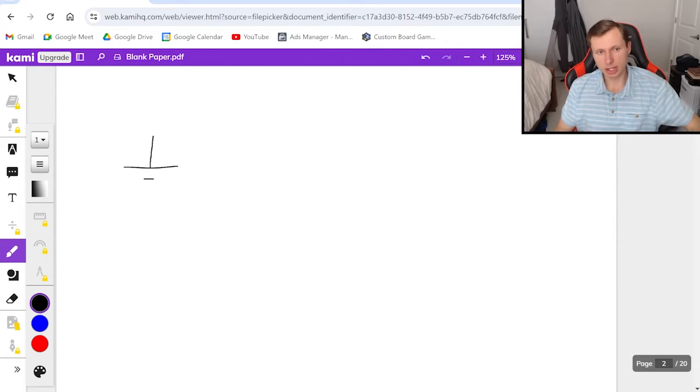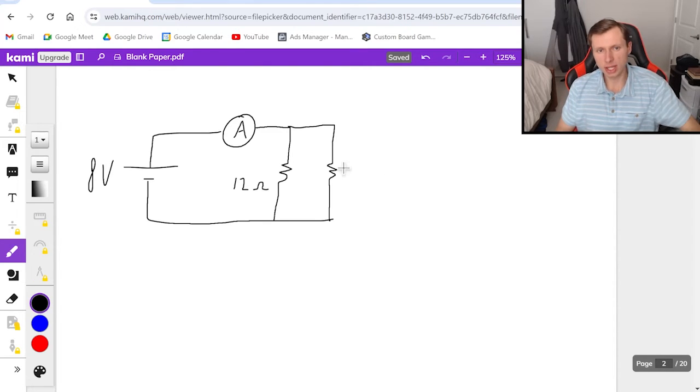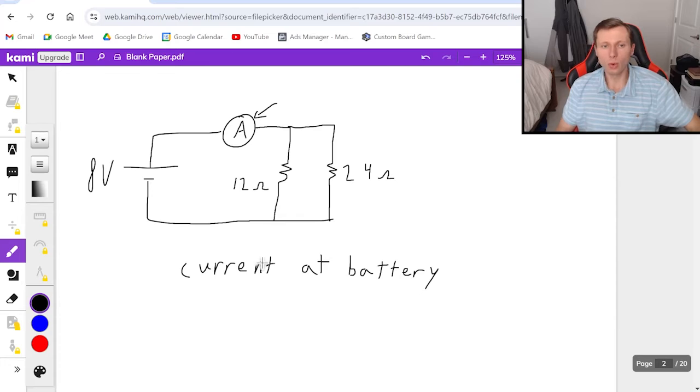For the second circuit I have an ammeter here that is in series with two resistors who are in parallel like this. I'll say the voltage source is eight volts. The left resistor is 24 ohms and I want the reading on that ammeter right there. So in other words we can find this by finding the current at the battery or you could also add the two currents across these two resistors but I think that would take a little bit longer.